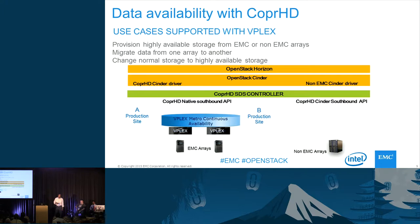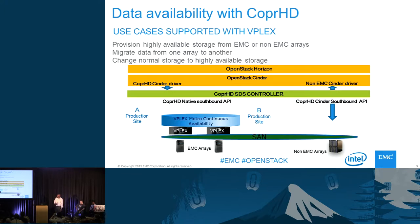The workflow is essentially like this: the end user goes to Horizon UI and requests a volume to be created. OpenStack Cinder gets the request and passes it down to the SDS controller, Copperhead. Copperhead, using the Cinder southbound interface, creates provisioning on the non-EMC arrays. That storage is now mapped to vPlex through SAN, making it available as a backend storage. Copperhead then uses its native integration with vPlex to create a virtual volume representing two volume mirrors, which is given back to OpenStack. Cinder attaches that volume to the instance.